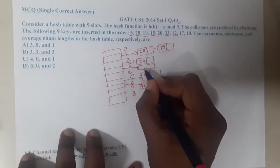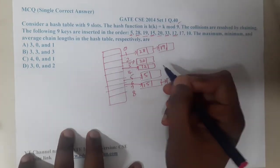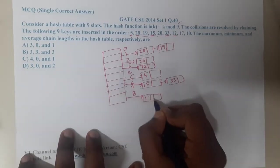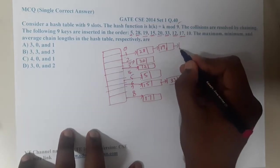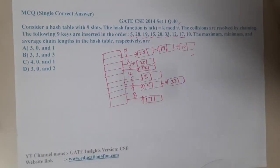Now 17 mod 9, it is 8. So it is nothing but 17. At last, 10 mod 9 is nothing but 1. So we have successfully formed the chaining.